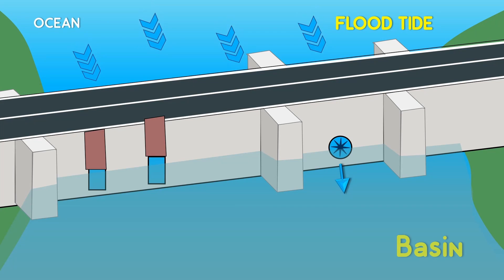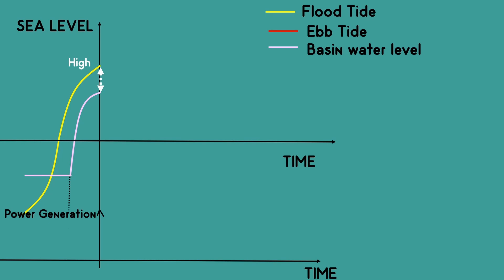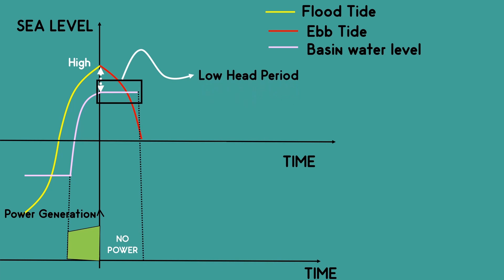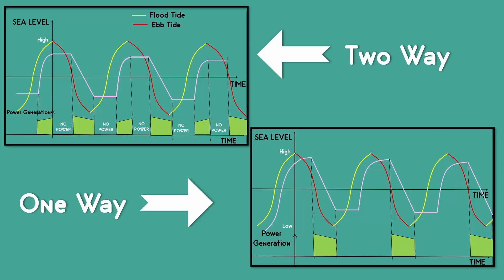If we need to generate electricity during both the ebb tide and the flood tide, we need a two-way turbine. Here, the turbine is unlocked during both flood tide and ebb tide. However, it is locked when we have insufficient head to generate electricity. Even here, the power generation is not continuous, but the generation period is increased compared with the one-way cycle.